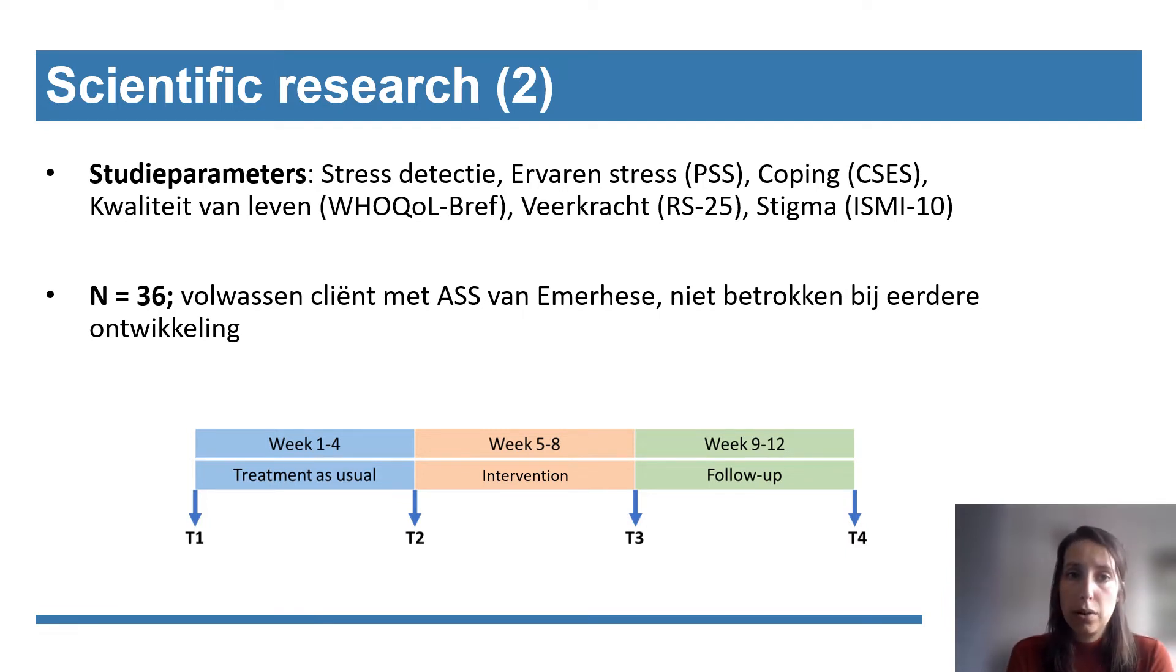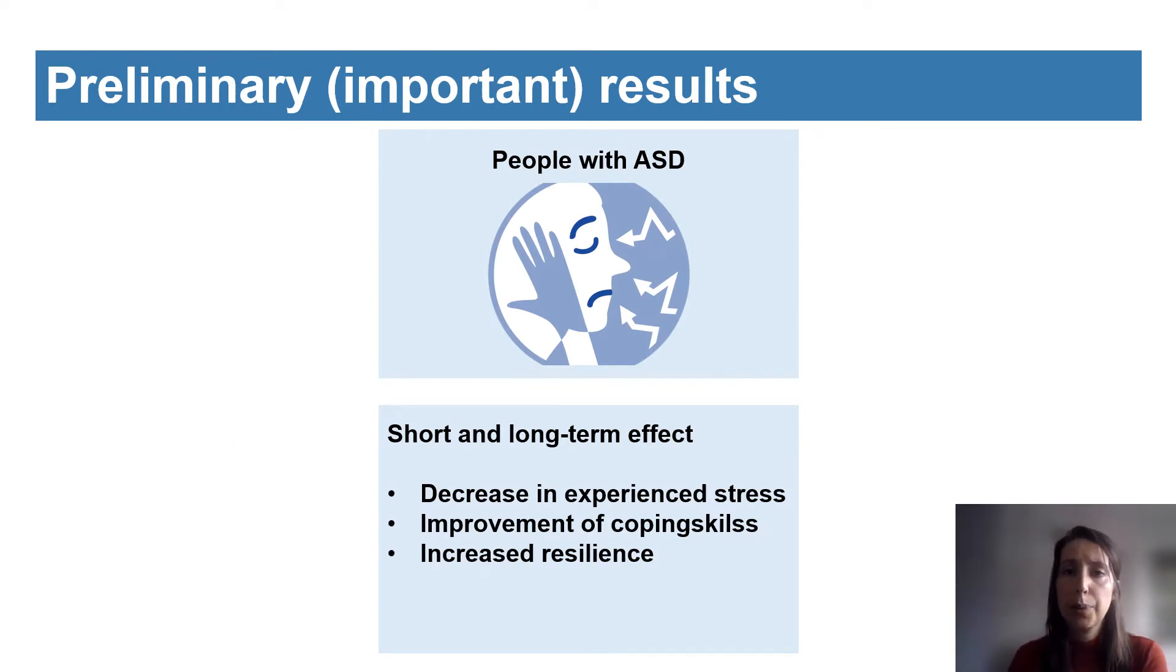The setup was as follows: the questionnaires were administered four times over a period of three times four weeks. The first four weeks consisted of treatment as usual, functioning as a control phase. This was followed by a four week intervention phase in which the users used the SAM app, and afterwards was followed by the follow-up phase with treatment as usual. And in the switch of all those phases we conducted the questionnaires with the outcome parameters.